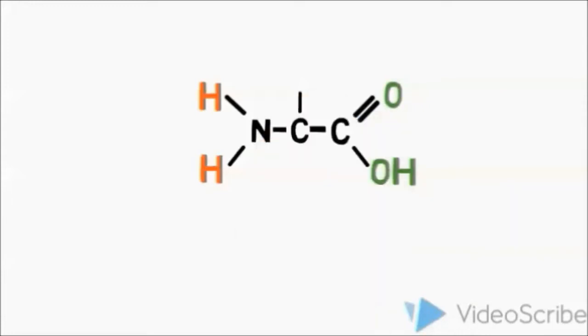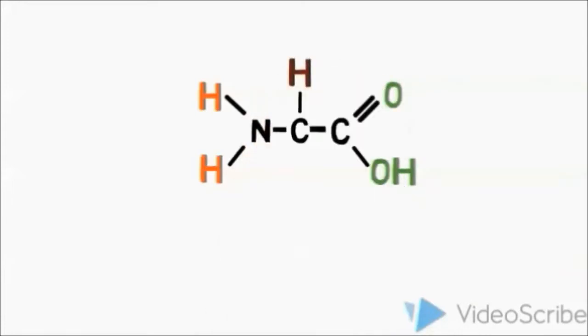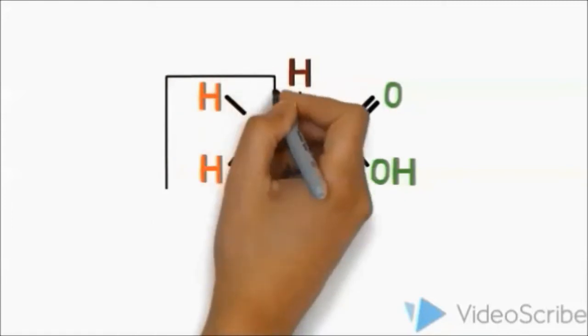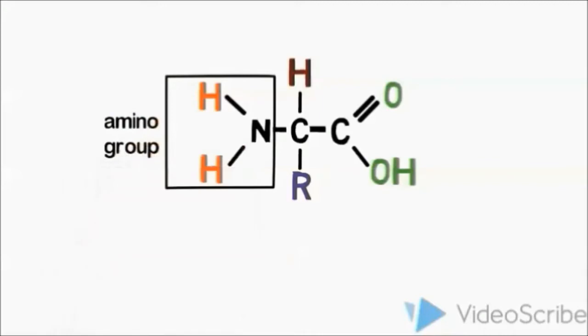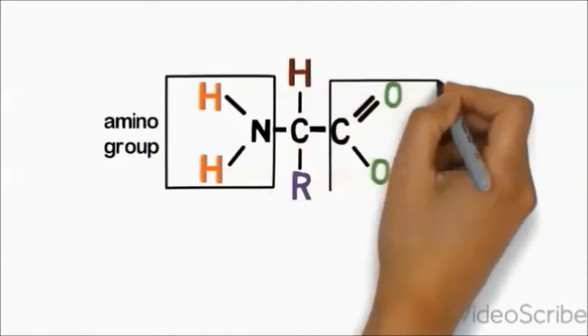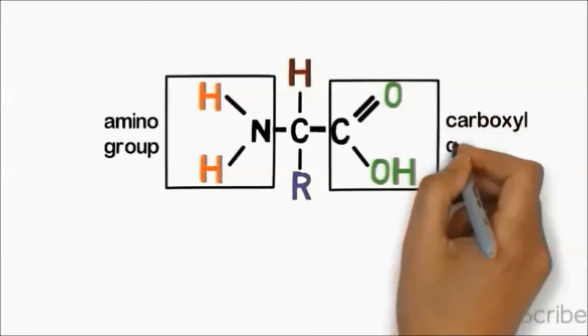Another atom that binds to the carbon center is hydrogen and R group. Each amino acid has different R group. The characteristic of amino group is basic while the characteristic of carboxyl group is acidic.